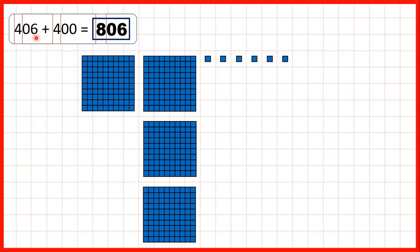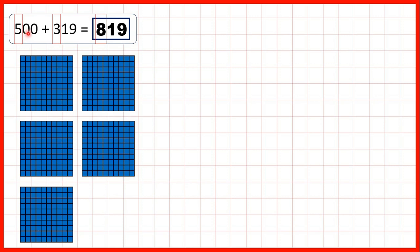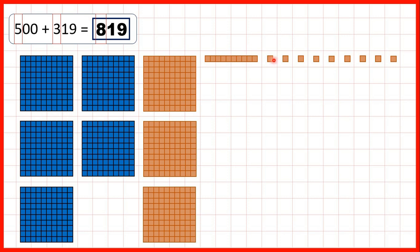Then we had 406 — that's four hundreds, no tens and six ones. If we add four hundreds, we now have eight hundreds altogether, but we still have no tens and we still have six ones. Then we started with our multiple of 100, which was 500, and we were adding 319 — that's three hundreds, one ten and nine ones. Altogether we now have eight hundreds, and because there weren't any tens or ones in the number we started with, the tens and ones we added appear exactly as they are in our answer: one ten and nine ones.